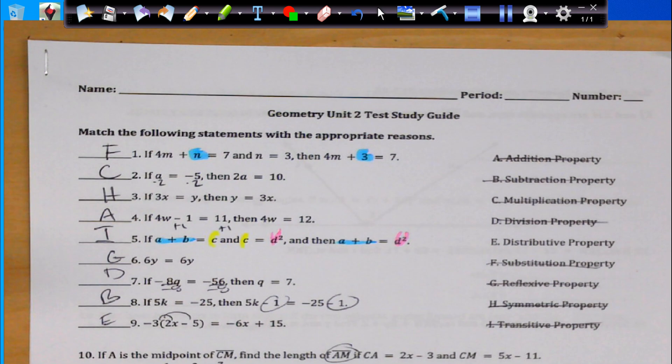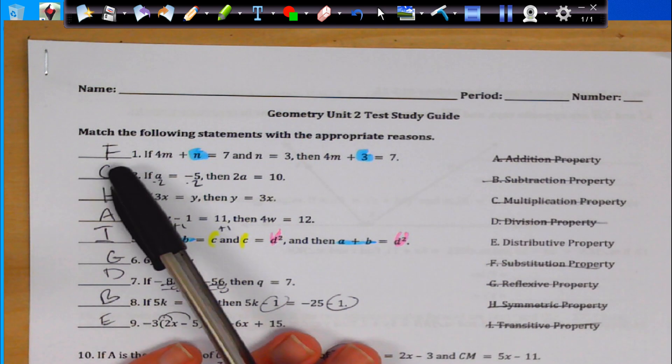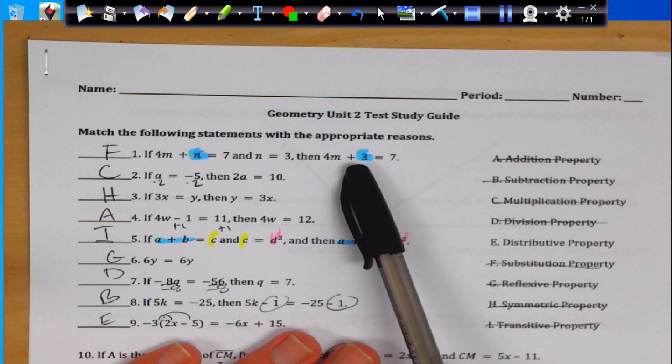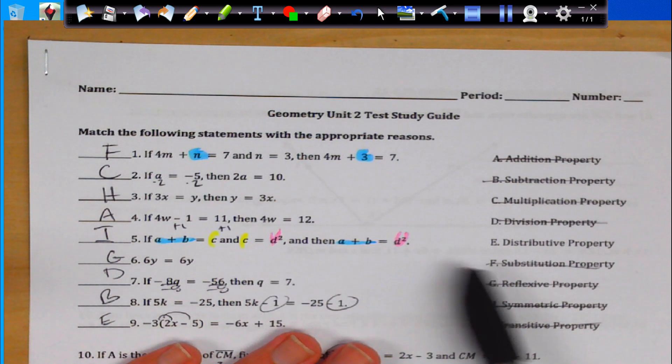All right, welcome. This is Unit 2 Study Guide, and let's go over our properties. Here, here we go. Number one, we're replacing n with n equals 3.